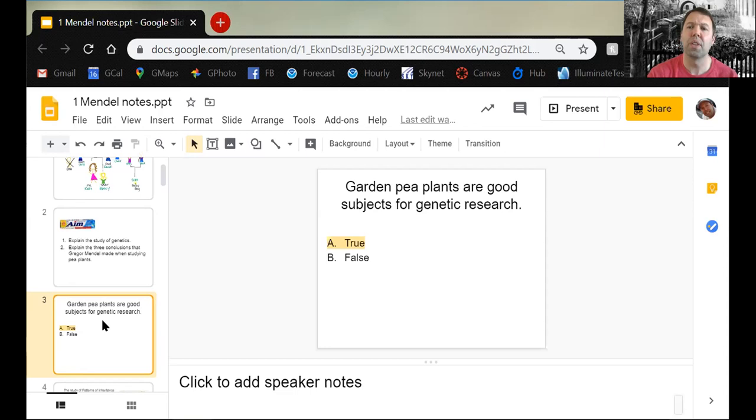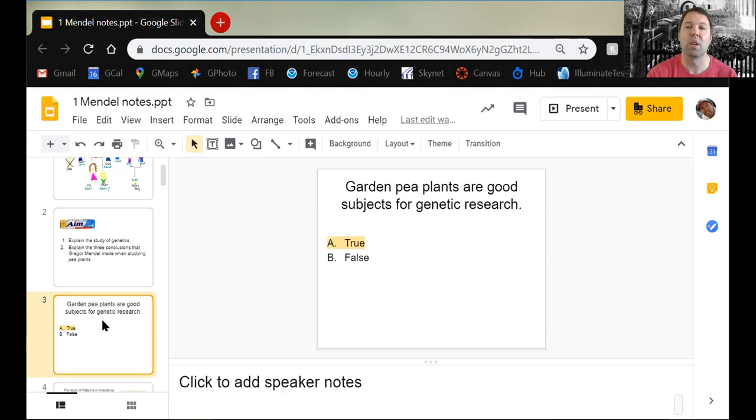The other organism that's pretty easy to use for genetic research is fruit flies. They used these in the 1920s. They grow very quickly. They have quite a few simple dominant and recessive traits. They also have some sex-linked traits which they started to figure out.